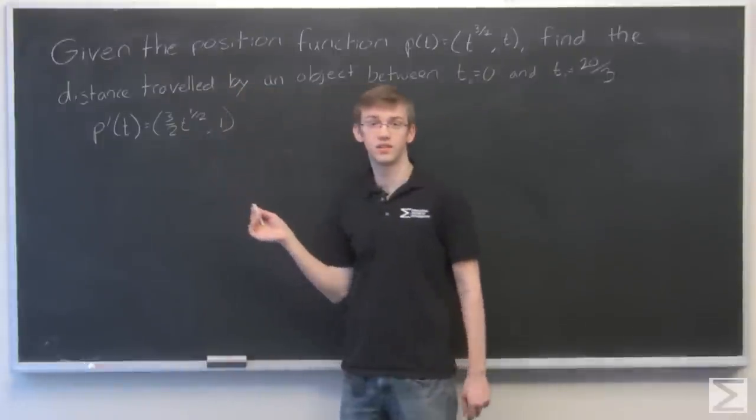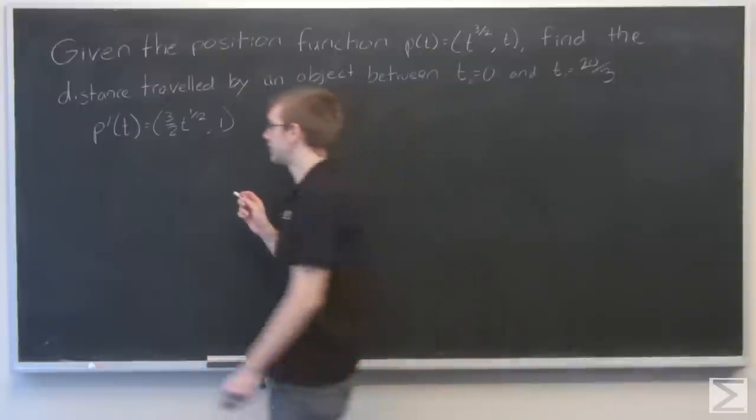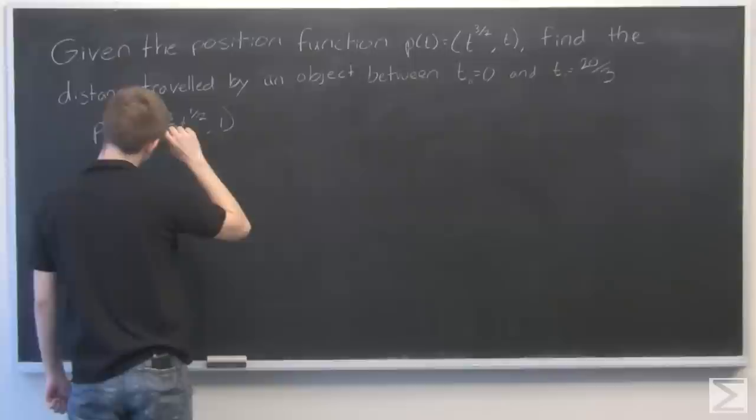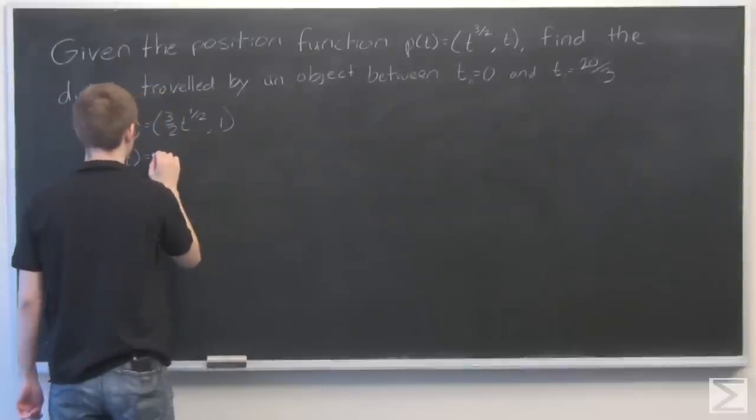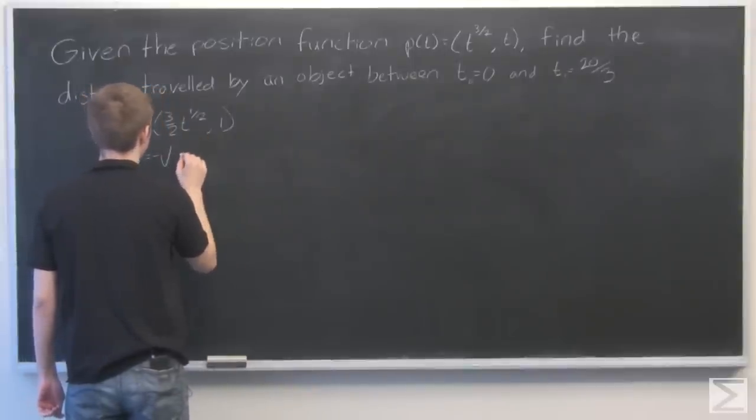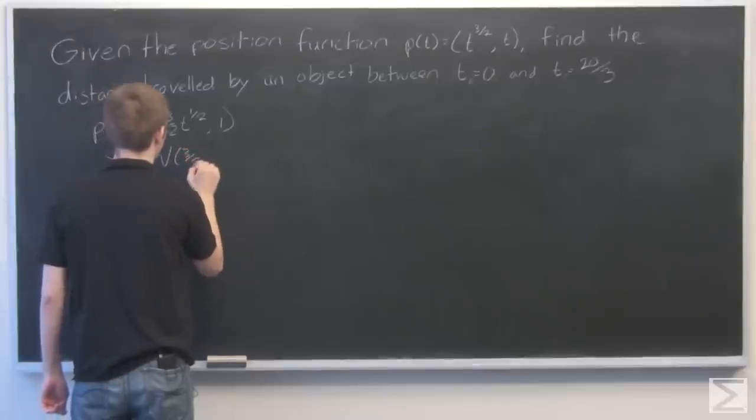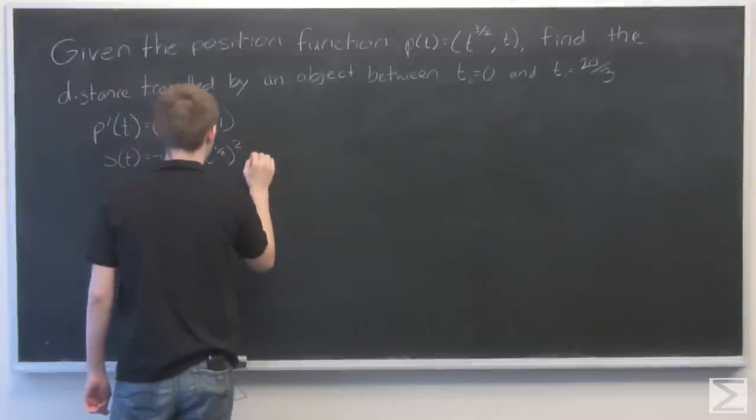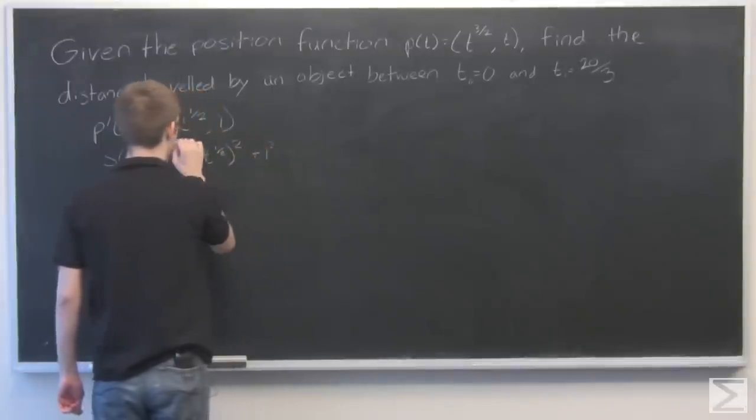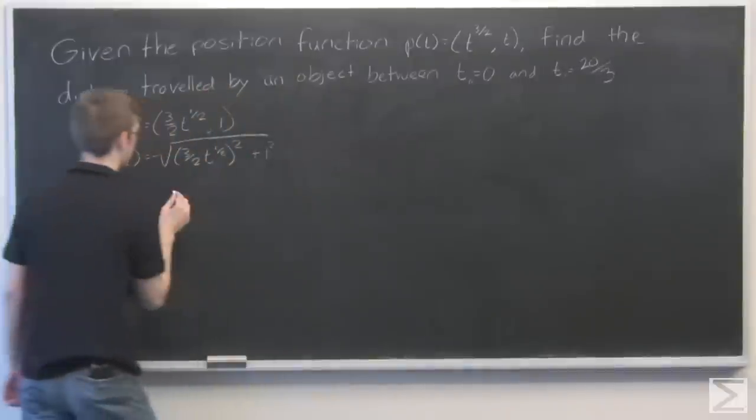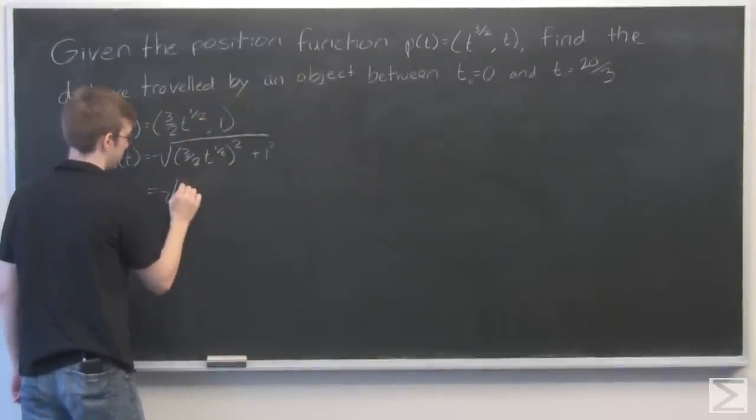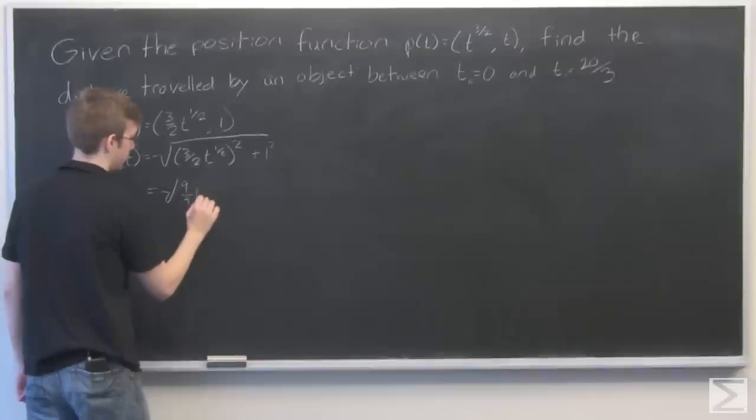So here we have velocity, and now for speed we just take the magnitude of this. So 3 halves t to the 1 half squared is just 9 fourths t.